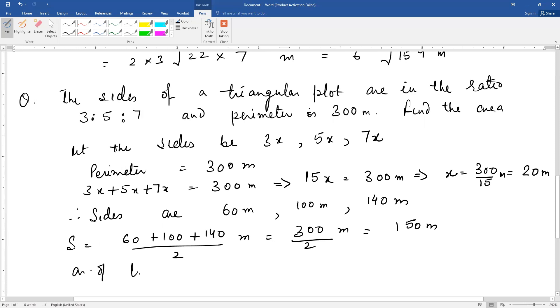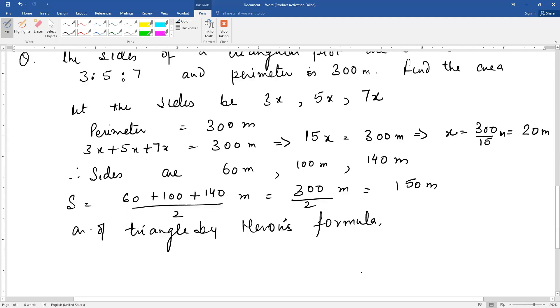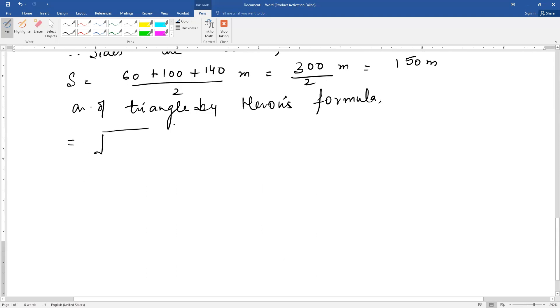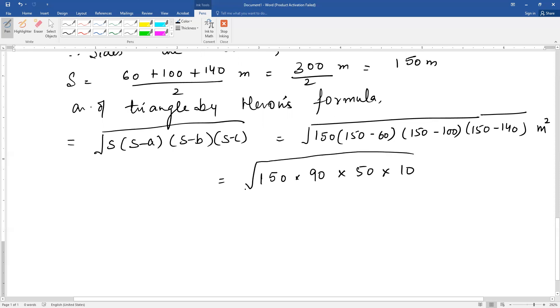Therefore area of triangle is by Heron's formula. If you write Heron's formula, then you will remember the formula. Now we will put S to 150, 150 minus 60, 150 minus 100, 150 minus 140. This comes out to be 150 into 90 into 50 into 10 meters squared.